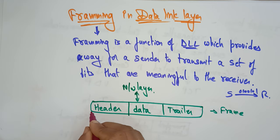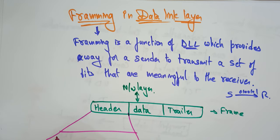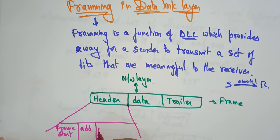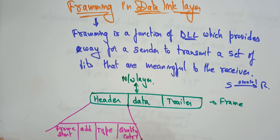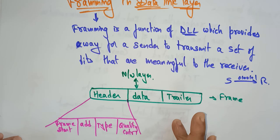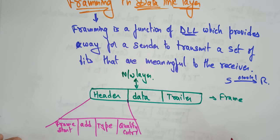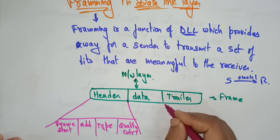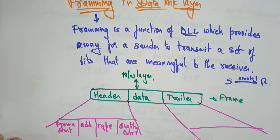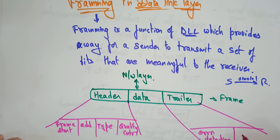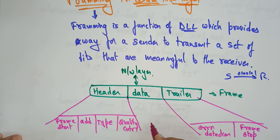The header consists of frame start bits, addressing — that is the address of the source as well as the destination — the type of the data, and quality control. This is the information that the header consists of regarding the data. The trailer consists of error detection — if any error is there it is going to be detected — as well as frame stop bits. The frame start bit is in the header and the frame stop bit is in the trailer.